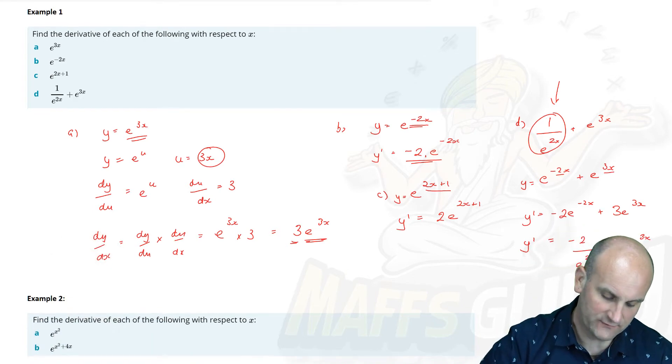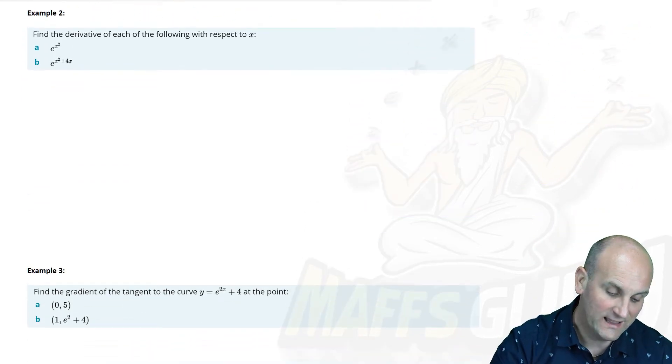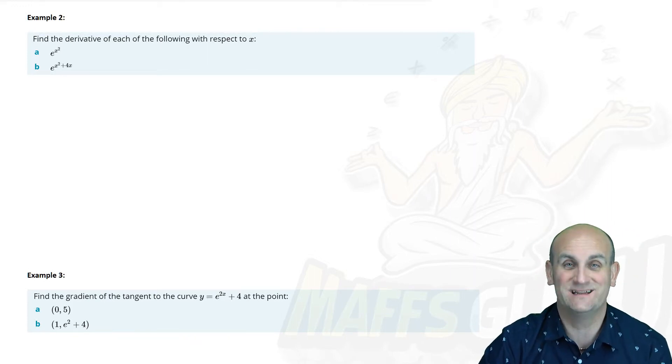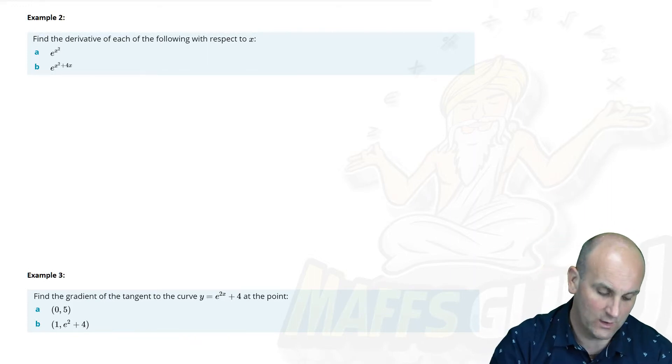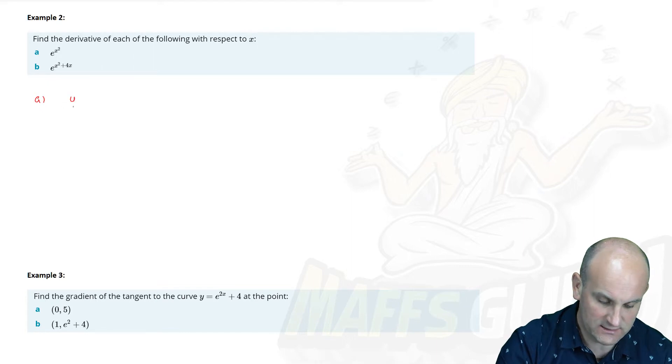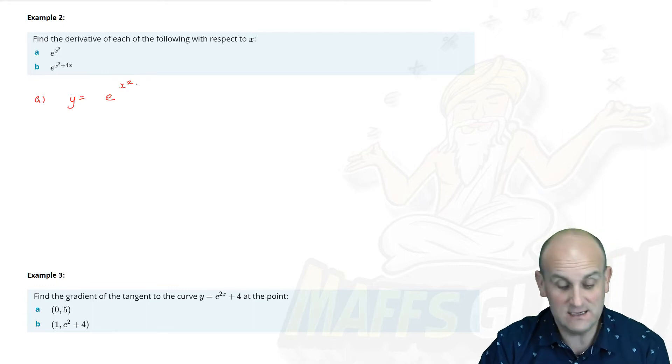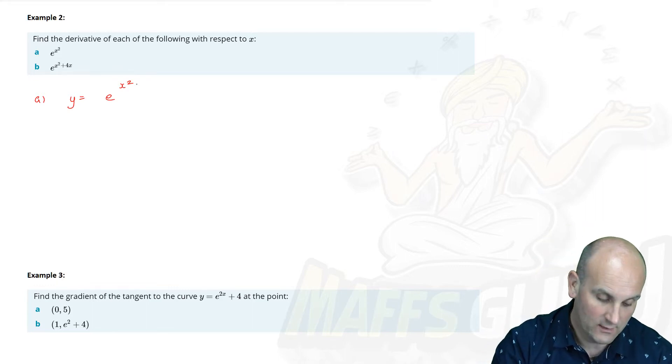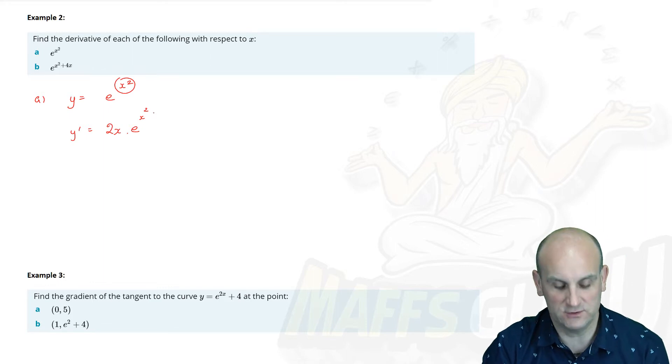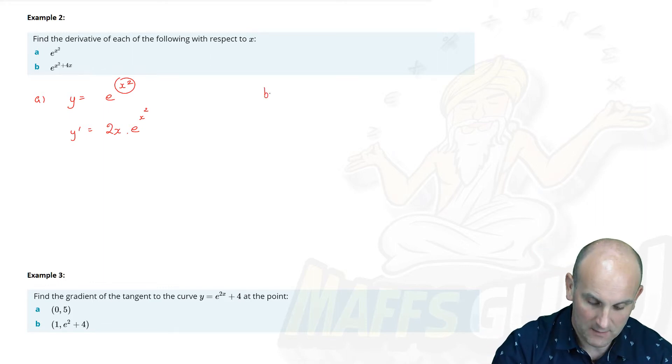We're loving this stuff. Now, example 2. Exactly the same. It just looks more complicated. But actually it really isn't. So, let's look at part a. So y is equal to e^(x²). I could do this using the chain rule. I don't need to. I just know now that y' is equal to the differential of that, which is 2x, multiplied by e^(x²), my original function. God, this stuff is awesome.